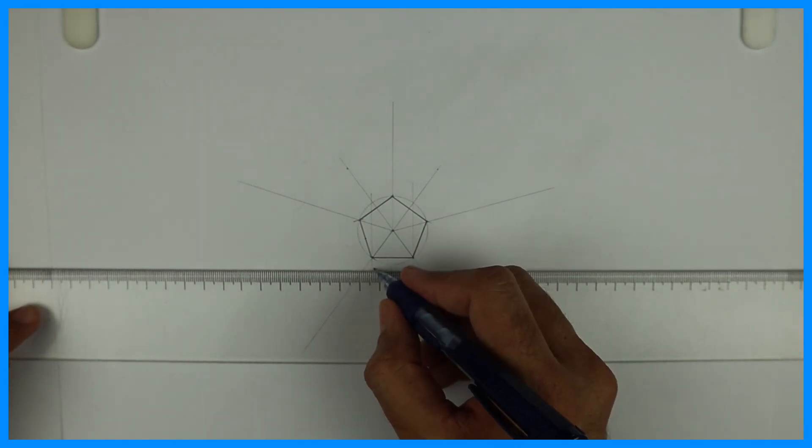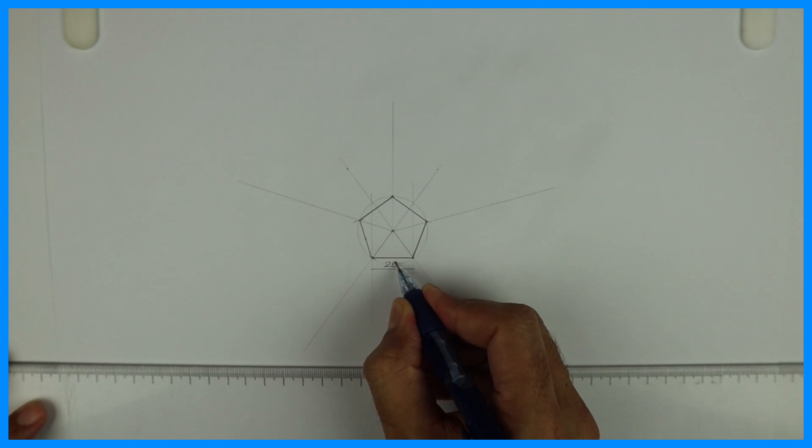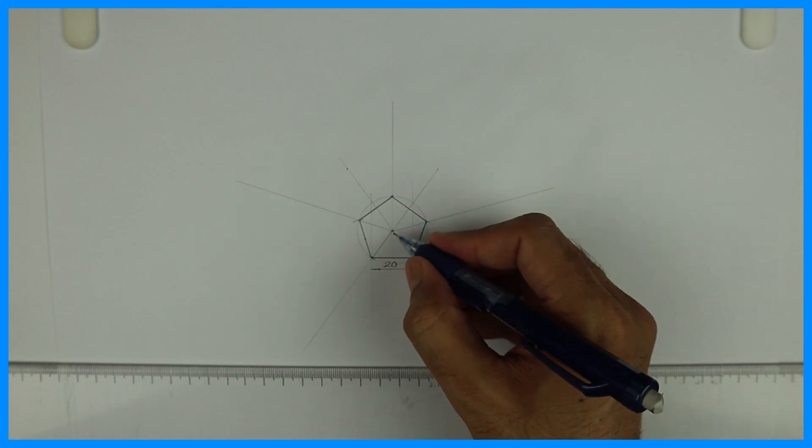So first we will draw a pentagon of side 20mm. After that we'll find out the center point of the pentagon and draw